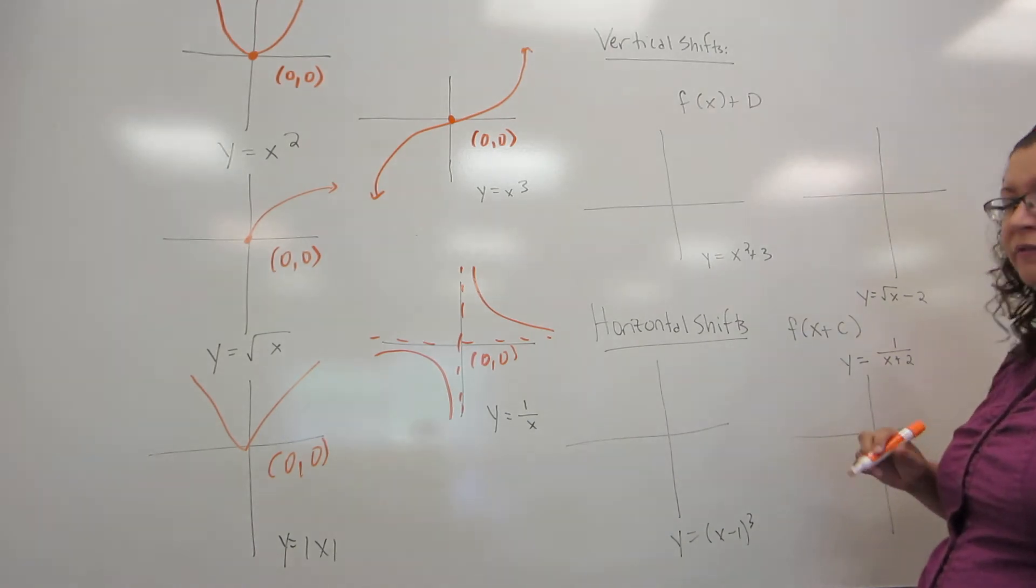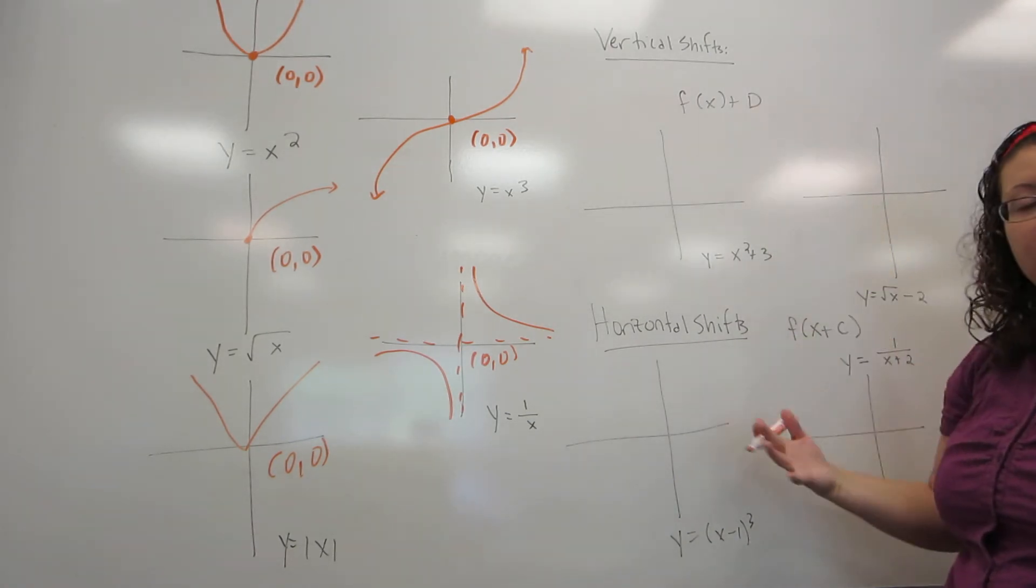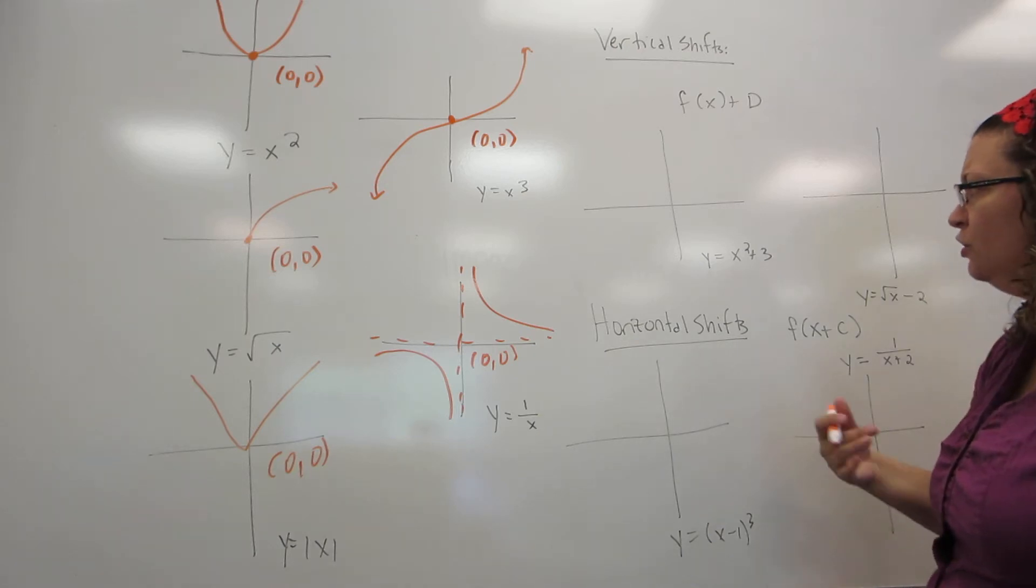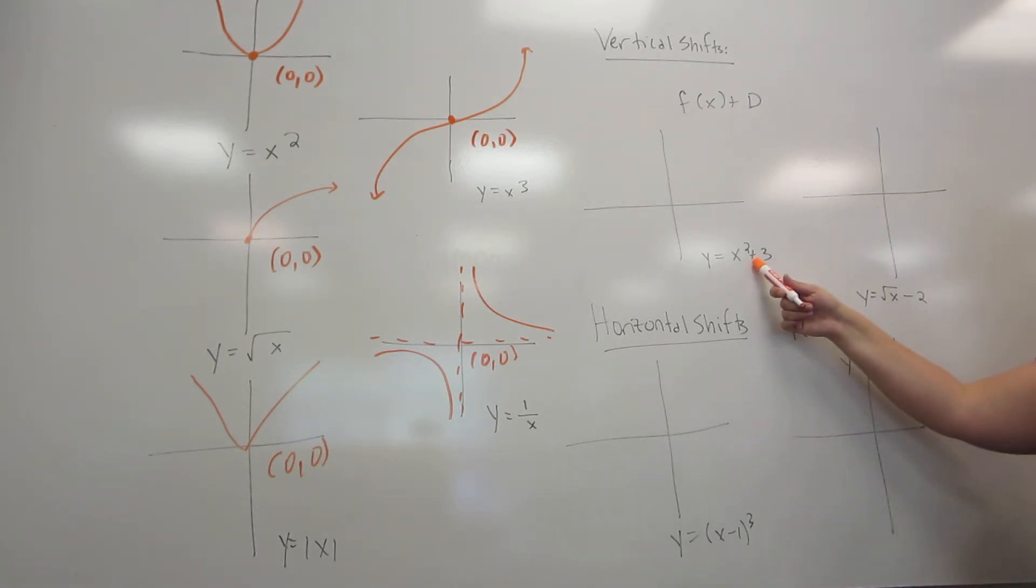Vertical shifts are when you add a number after the original function. So we're going to look at two examples, x squared plus 3 and the square root of x minus 2. Now, it's vertical, but it will be up with a positive number added and down when you're subtracting a number.